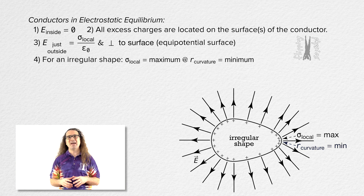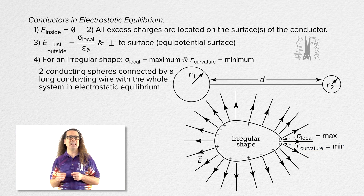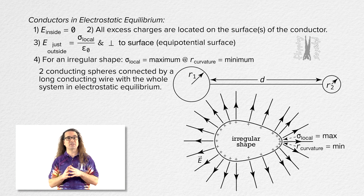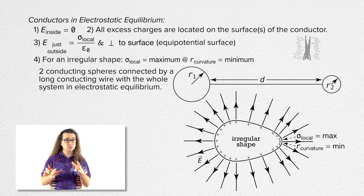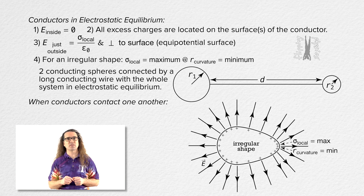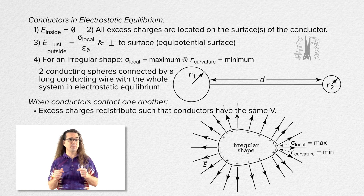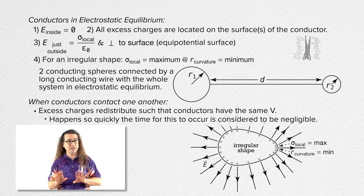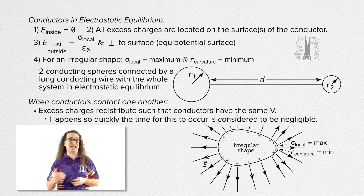To prove this, we have two conducting spheres connected by a long conducting wire with the whole system in electrostatic equilibrium. This system is a conductor in electrostatic equilibrium. In other words, when two conductors are brought into contact with one another, the charges redistribute such that both conductors are at the same electric potential. Please realize this happens so quickly that the time for this to occur is considered to be negligible.